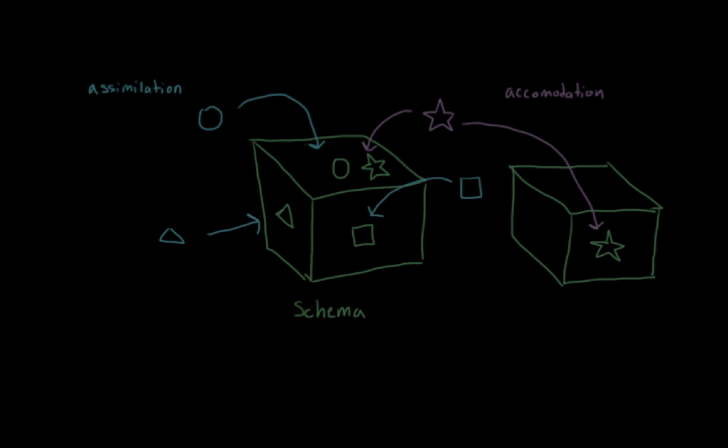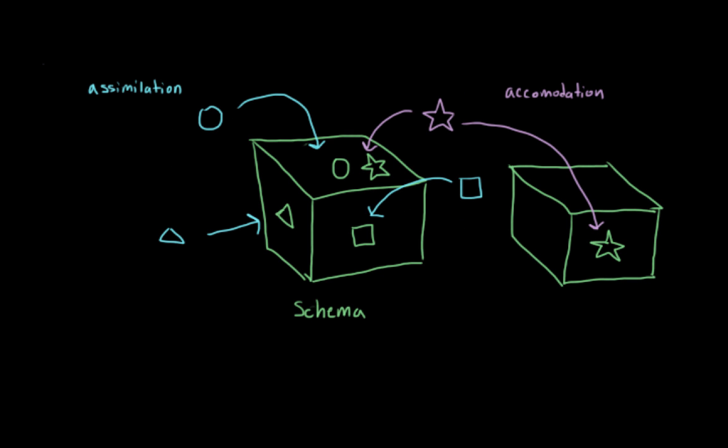I think it's easy to mix up assimilation and accommodation because they're so similar to one another. And so I think the best way to distinguish between assimilation and accommodation is to keep an example in your head. But if you're struggling with that, another way to distinguish between them might be to look at the differences between these two words.